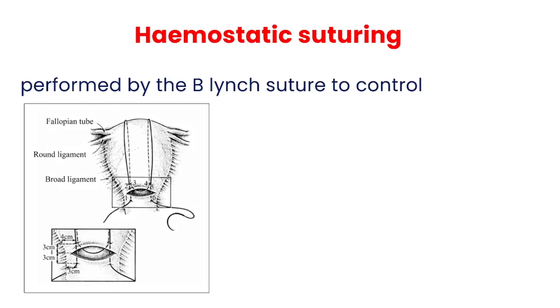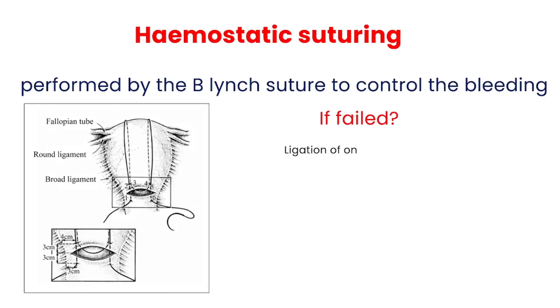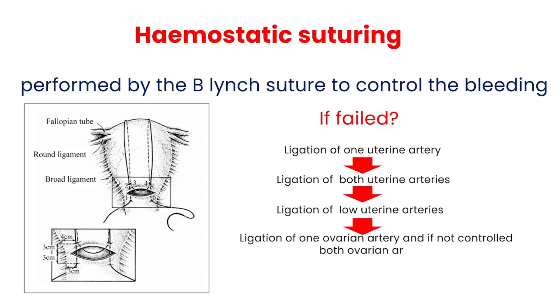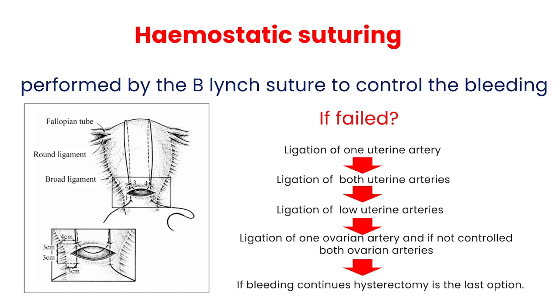Hemostatic suturing is performed using the B-Lynch suture to control bleeding. If that fails, successive ligation is performed: first one uterine artery, then both uterine arteries, then the low uterine arteries, then one ovarian artery, and if still not controlled, both ovarian arteries are ligated. This is called stepwise uterine devascularization.